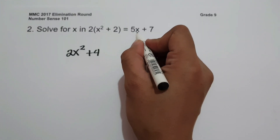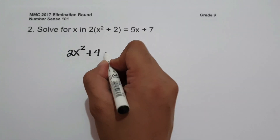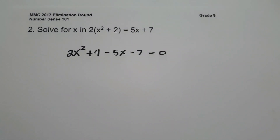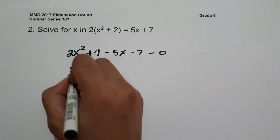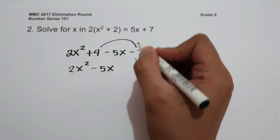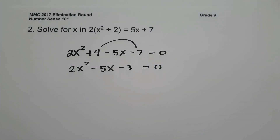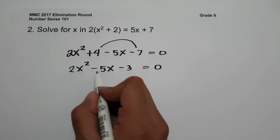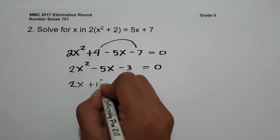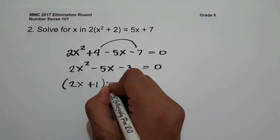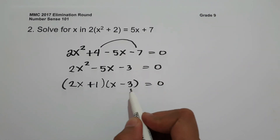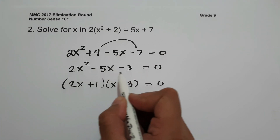Let us move 5x plus 7 to the side of 2x squared plus 4, giving us negative 5x minus 7 equals 0. Simplifying, we have 2x squared minus 5x, and subtracting 4 minus 7 gives negative 3, equals 0. The factors of 2x squared minus 5x minus 3 are 2x plus 1 and x minus 3. Multiplying these gives 2x squared minus 5x minus 3.